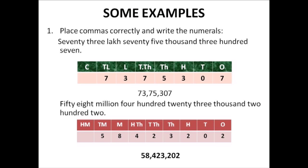The second example is '58 million, four hundred twenty-three thousand, two hundred two' — this is according to the international system of numeration. We form the table with ones, tens, hundreds, thousands, ten thousands, hundred thousands, millions, ten millions, and hundred millions. 58 million fills positions as 5, 8; 423 thousand fills the thousands period as 4, 2, 3; and 202 fills the ones period as 2, 0, 2.